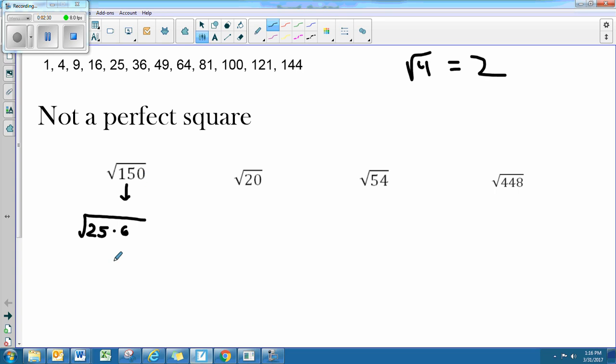Now, mathematically, you're allowed to take and break this up even more. You can take the square root of 25 and multiply that by the square root of 6. That's okay. Mathematically, we are allowed to do that.